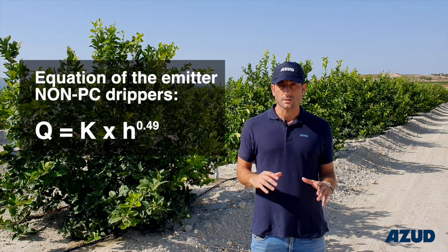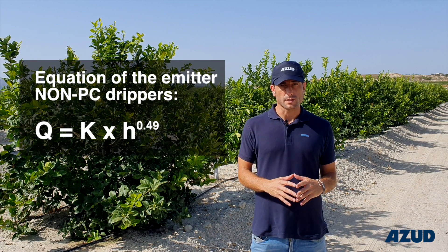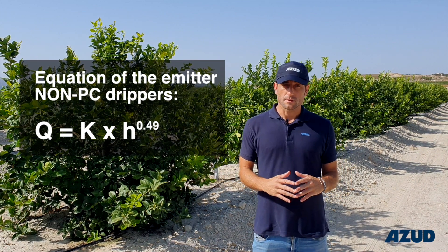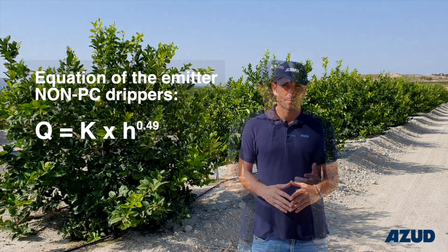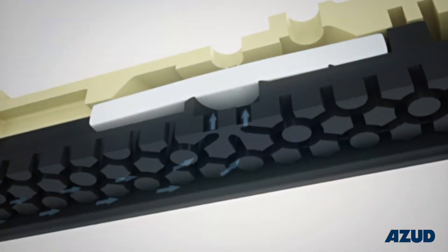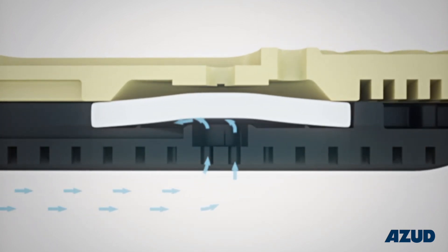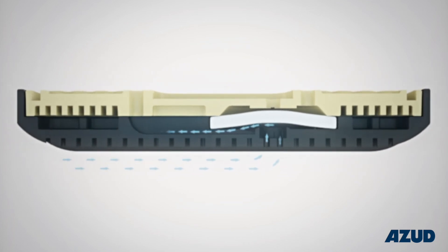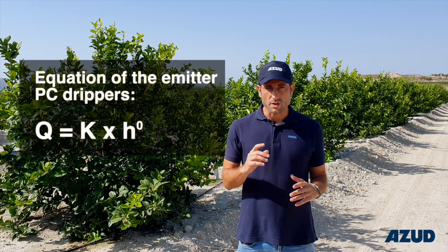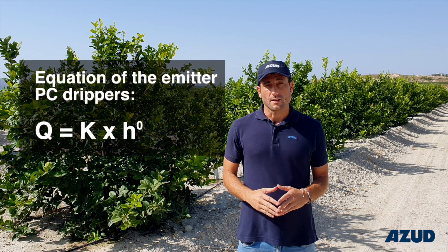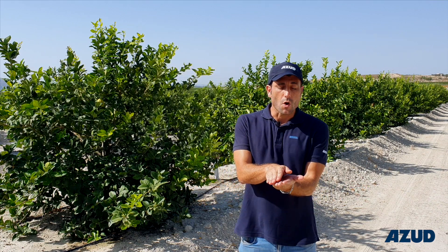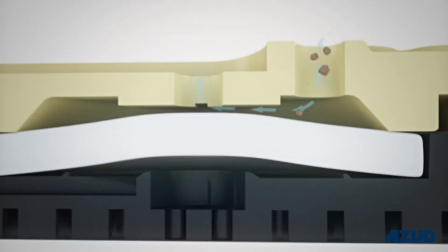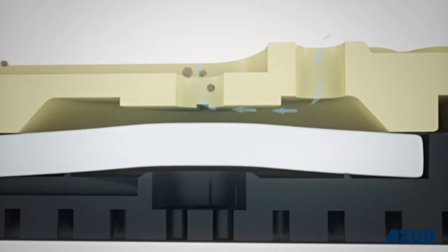In non-PC drip lines, the flow in the emitter is never going to be the same as in the following emitter. This is because it is not compensated. In the case of pressure-compensating emitters, the situation changes due to the silicon membrane. The membrane keeps the same flow despite the pressure differential present in the drip lines. The equation tells us that every flow alteration generated by pressure is zero, meaning the silicon membrane opens up allowing higher flow rate when there is low pressure and closes down when we have higher pressure.